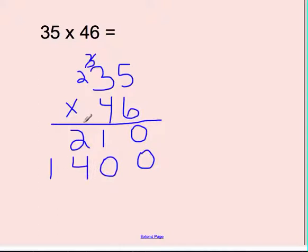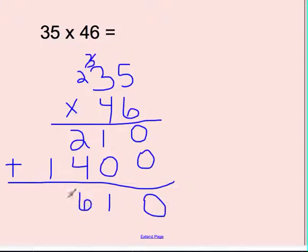And we look at the bottom. Are there any other numbers to multiply by? Nope. So we're done with that. So we're going to add them up. 0 plus 0 is 0. 1 plus 0 is 1. 2 plus 4 is 6. And 1 is just brought down. So our answer to 35 times 46 is 1,610.